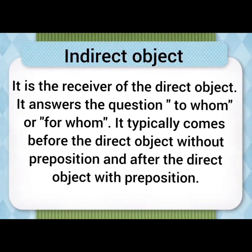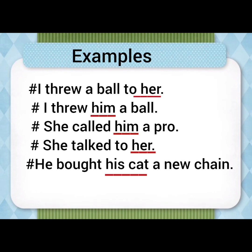The next is indirect object. It is the receiver of the direct object and answers the question 'to whom' or 'for whom.' It typically comes before the direct object without a preposition, and after the direct object with a preposition. For example, 'I threw him a ball' — him is the indirect object, answering 'to whom.' 'She talked to her' — her is the indirect object. 'He bought his cat a new chain' — for whom did he buy the chain? For the cat, so cat is the indirect object.